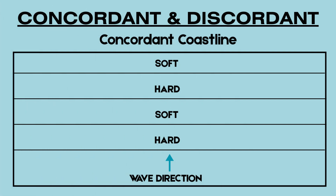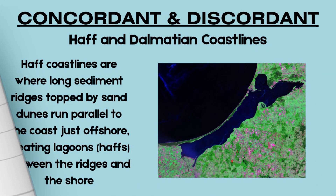This next section will cover concordant and discordant coastlines. Concordant coastlines are where the rock strata runs parallel to the sea, meaning that only one type of rock is exposed at a time. A real-world example is Haff coastlines, where long sediment ridges topped by sand dunes run parallel to the coast just offshore, creating lagoons — called haffs — between the ridges and the shore.